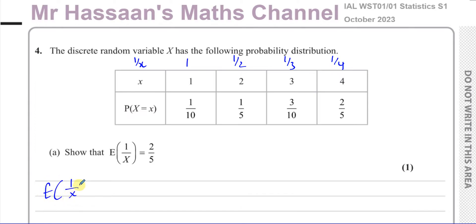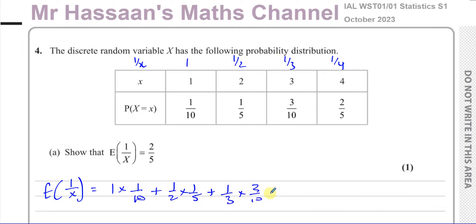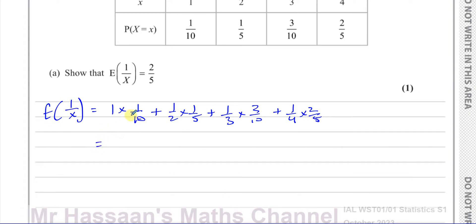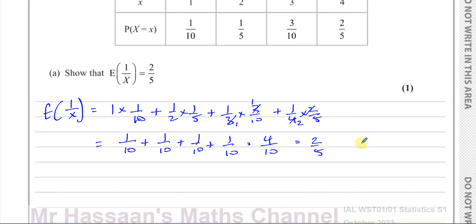The expected value of 1/X is: 1 × (1/10), plus (1/2) × (1/5), plus (1/3) × (3/10), plus (1/4) × (2/5). Each of those products gives 1/10, so we get 4/10, which equals 2/5. So the expected value of 1/X equals 2/5, and we'll leave it as a fraction to match the format in the question.